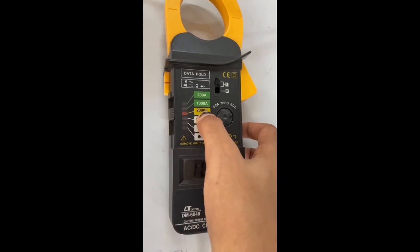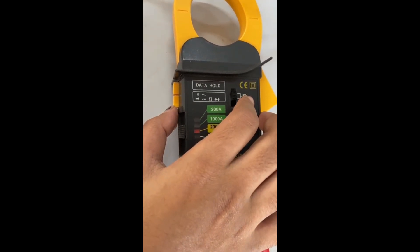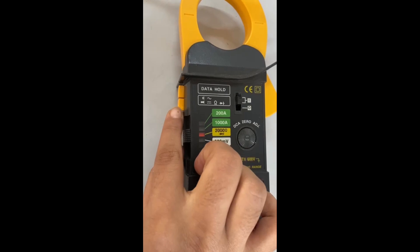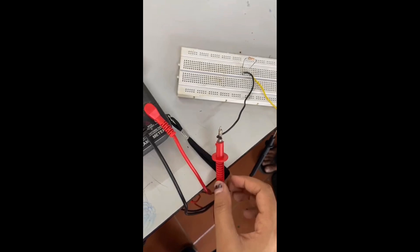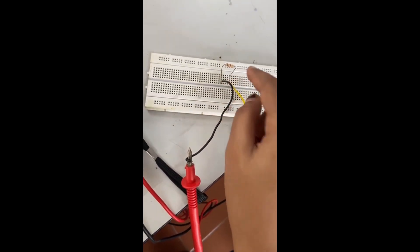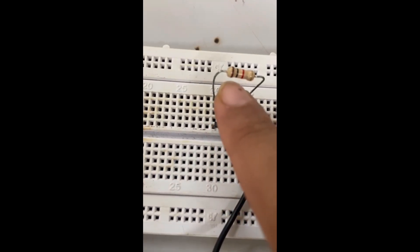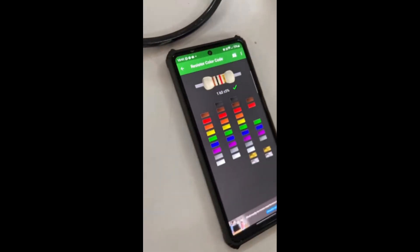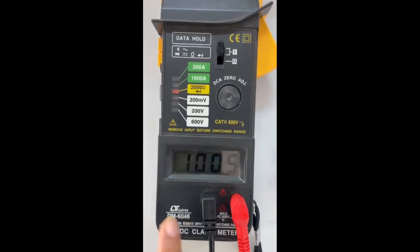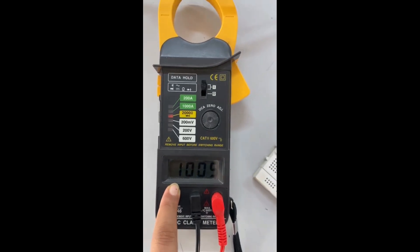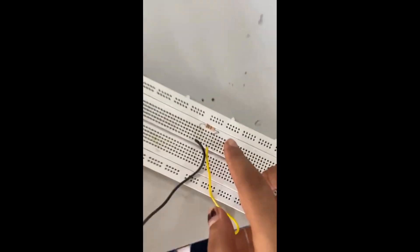Now we are measuring the resistance using the clamp meter. Note that you have to keep the yellow button like this to set it on resistance or DC mode. And we will be connecting these probes across the resistor to measure its resistance. It is quite visible that these colors indicate the value of 1 kilo ohms of resistance. And the meter is also showing the same. So that's another use of clamp meter measuring resistance.